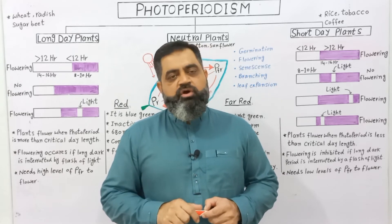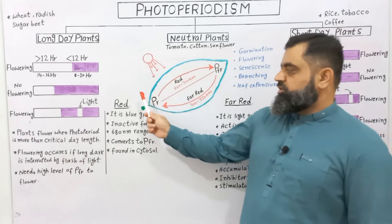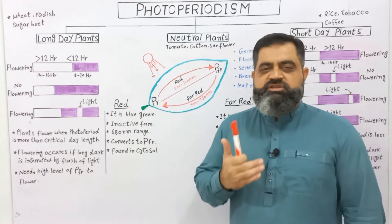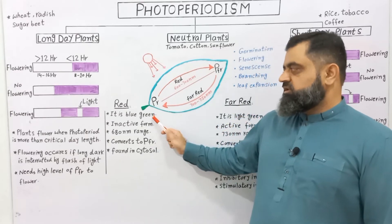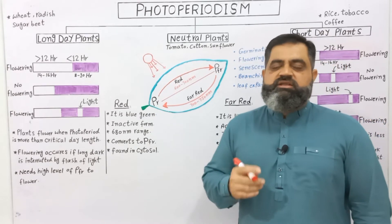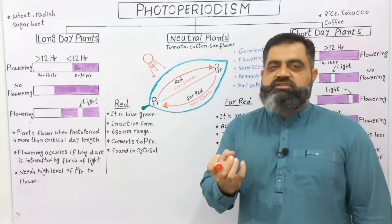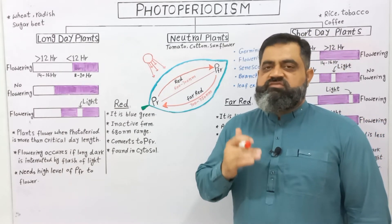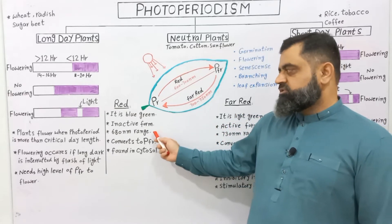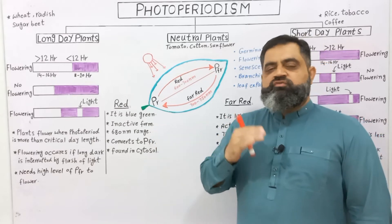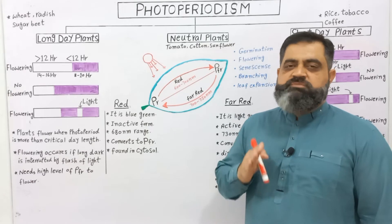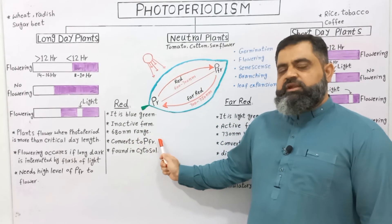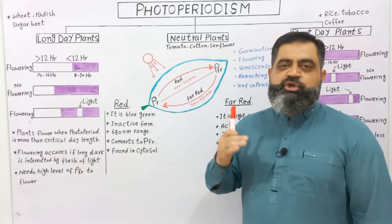The first type of phytochrome is known as phytochrome red, usually represented by Pr. Its main features are that it is blue-green in color, meaning this pigment absorbs this type of wavelength from light. It is also in inactive form because it is not necessary for the flowering and growth of plants. It absorbs wavelengths in the 680 nanometer range — usually between 600 to 700 nanometers. During daytime, this pigment is converted into the second type of phytochrome, which is known as phytochrome far red.